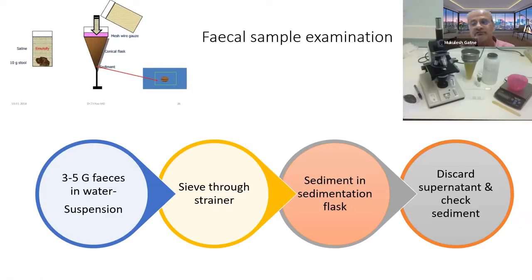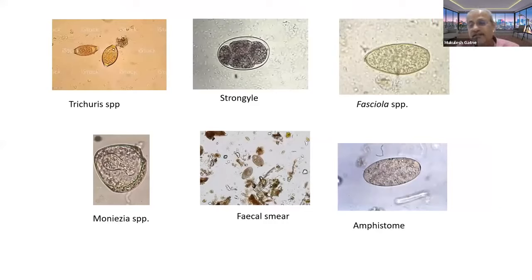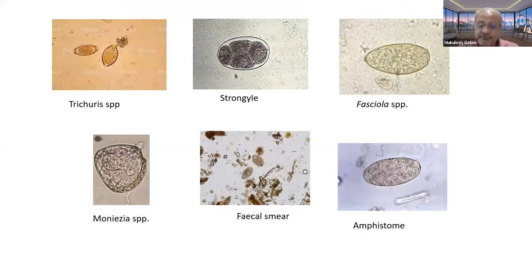Take one to two drops of sediment on a glass slide, apply a coverslip, and examine for the presence of microscopic eggs of different helminths. Depending upon the morphology of the eggs, you can identify the parasite in most cases. Trichuris eggs have a plug at both ends, barrel-shaped, yellowish in color. Strongyle eggs — note that strongyle is a big group including Haemonchus, Trichostrongylus, Oesophagostomum, Bunostomum, and Cooperia — all lay eggs of identical morphology, so a broad diagnosis is given that the fecal sample is positive for strongyle eggs.